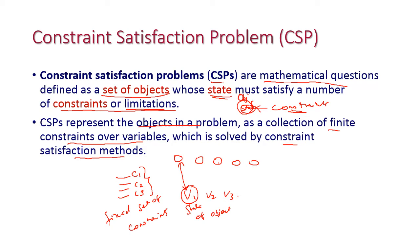While assigning a value to an object, we need to satisfy all these constraints. This problem is called the Constraint Satisfaction Problem.